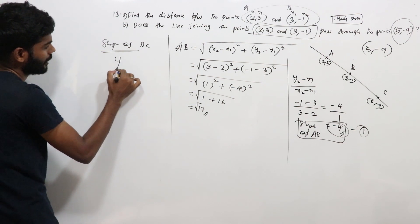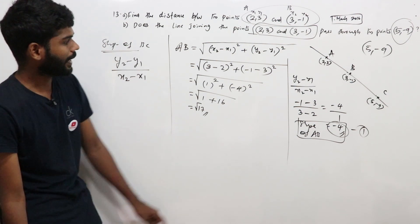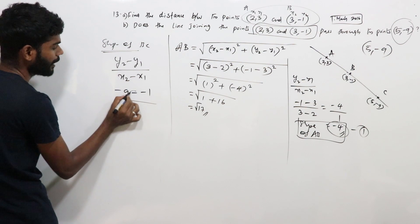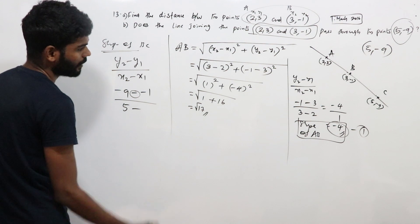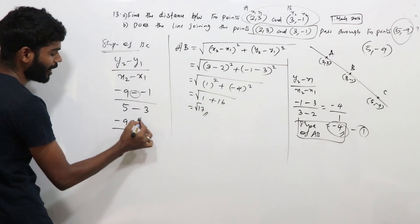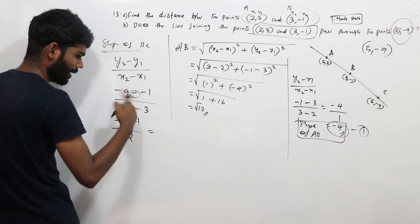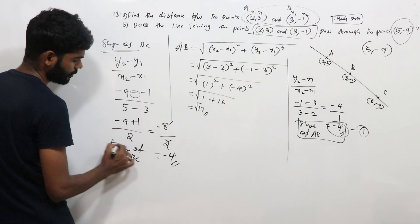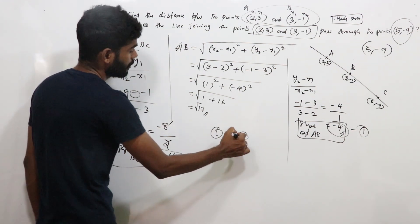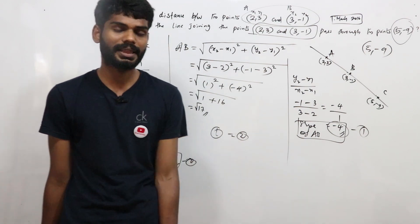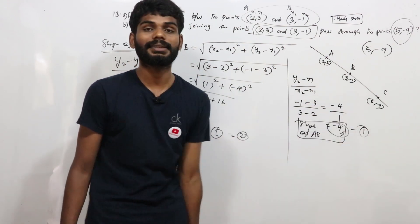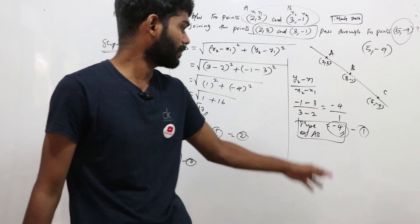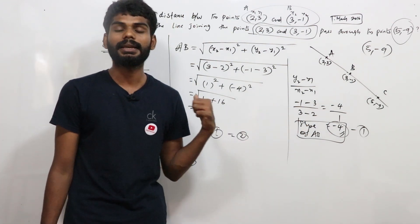Now slope of BC using points (3, -1) and (5, -9): y2 minus y1 by x2 minus x1 equals minus 9 minus of minus 1 by 5 minus 3. Slope of BC is not equal to slope of AB, so the point (5, -9) does not lie on the line. The line does not pass through that point.